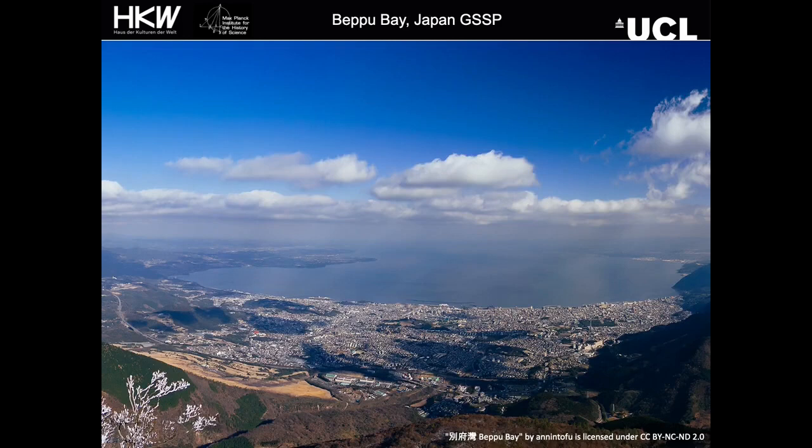Last but not least, this is a view of Beppu Bay in southern Japan that has recently joined the endeavour. The Japanese team have been working on a series of cores from the bay for many years, producing detailed records of industrial contaminants, nutrient inputs, and rather uniquely fossil fish scales recording the changes in sardine abundance due to changing water temperatures and the fishing industry.